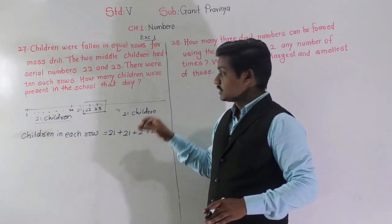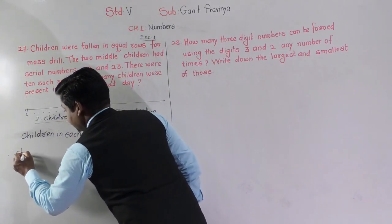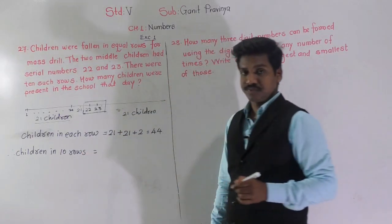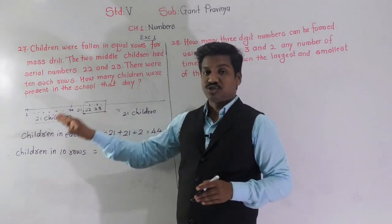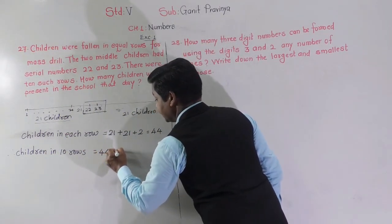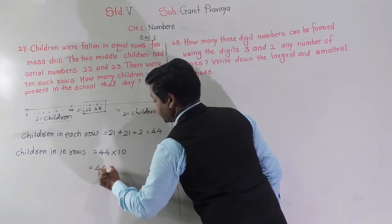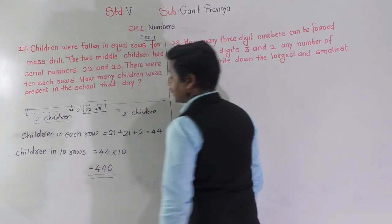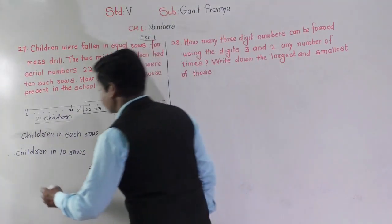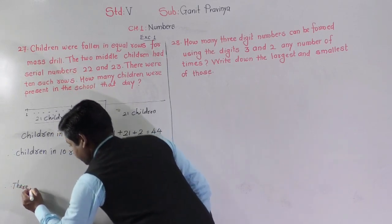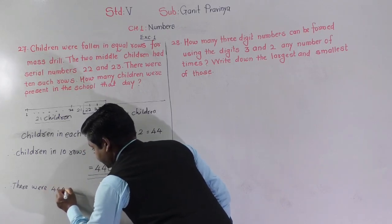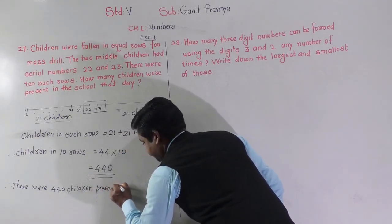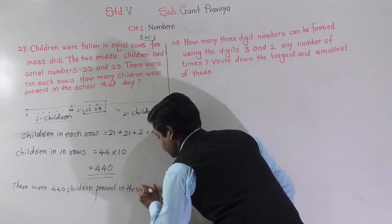Each row has 44 children and there are 10 such rows. So children in 10 rows equals 44 into 10, which is 440. There are 440 total children present in the school that day.